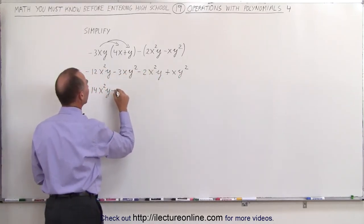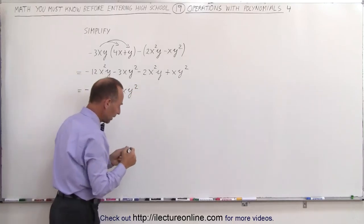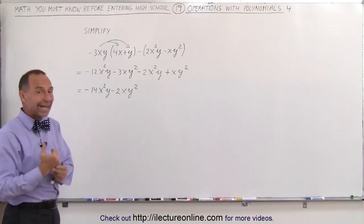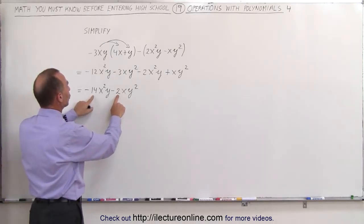So this becomes minus 3xy times 4x is minus 12x squared y. And minus 3xy times y is minus 3xy squared.